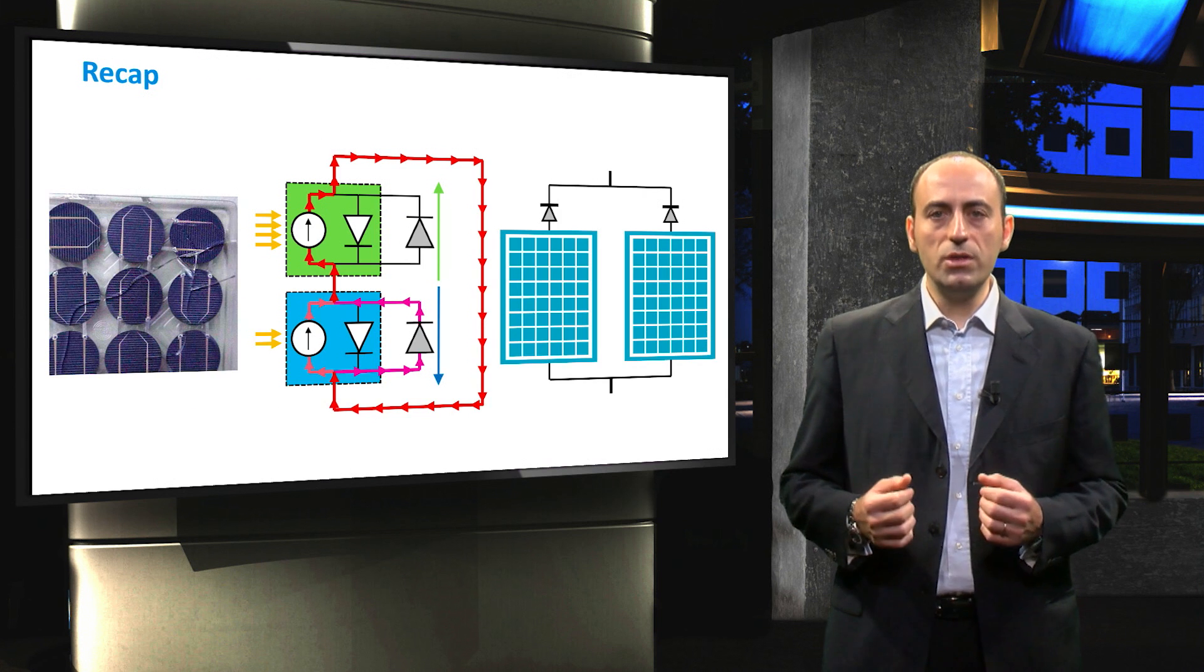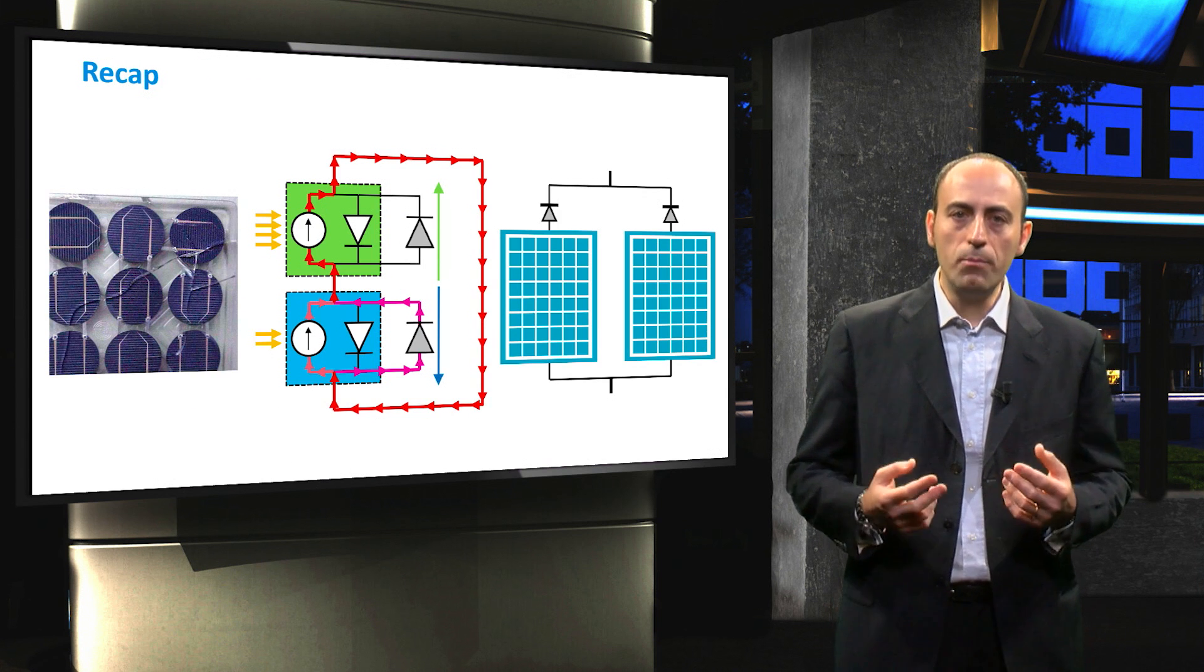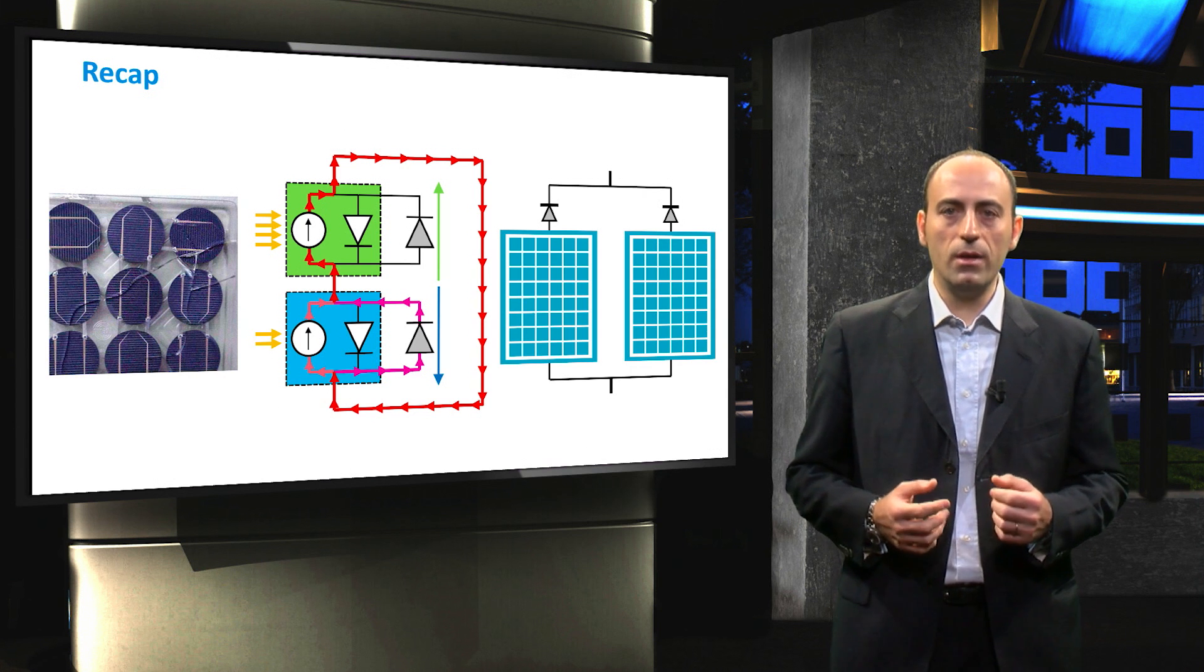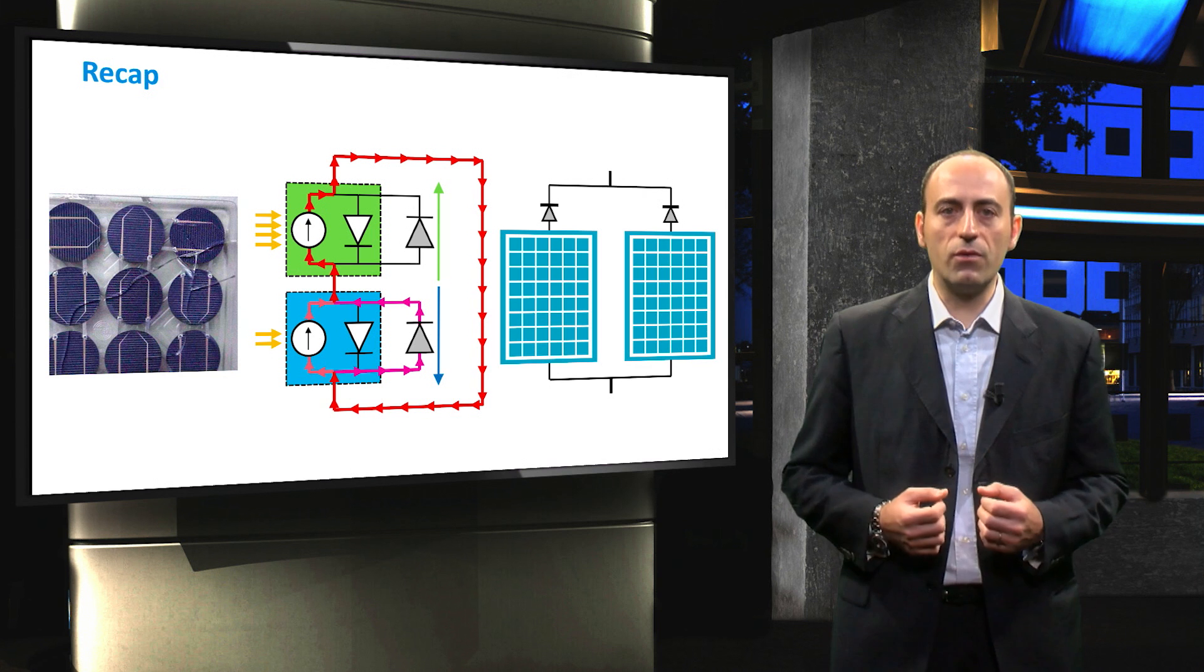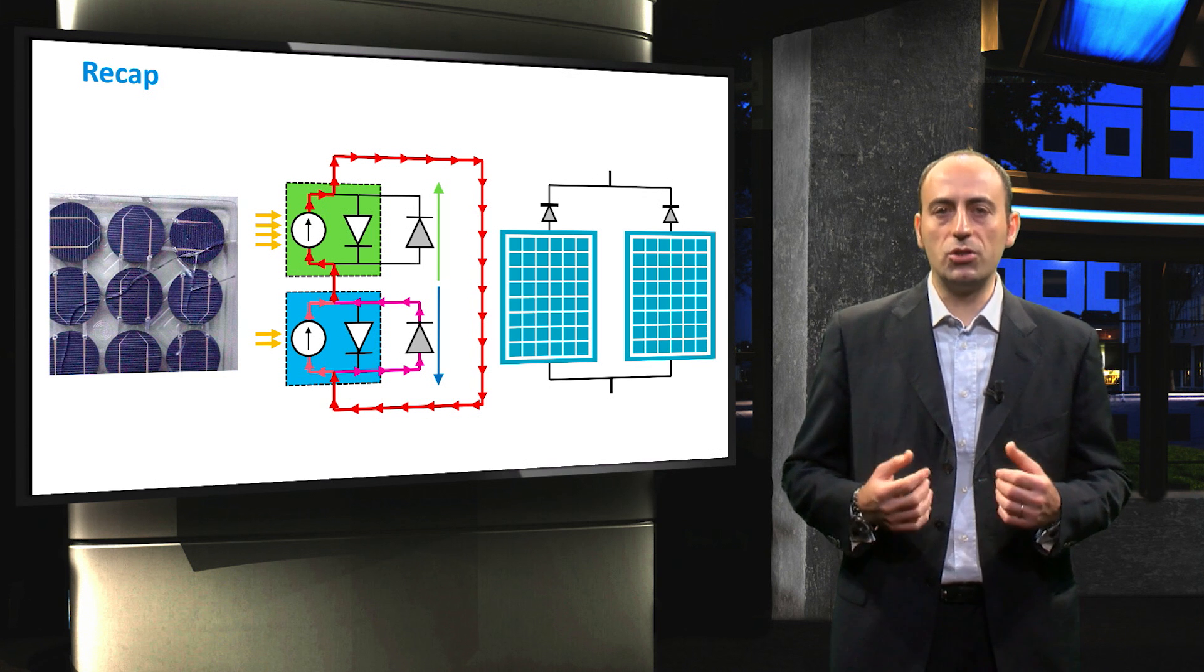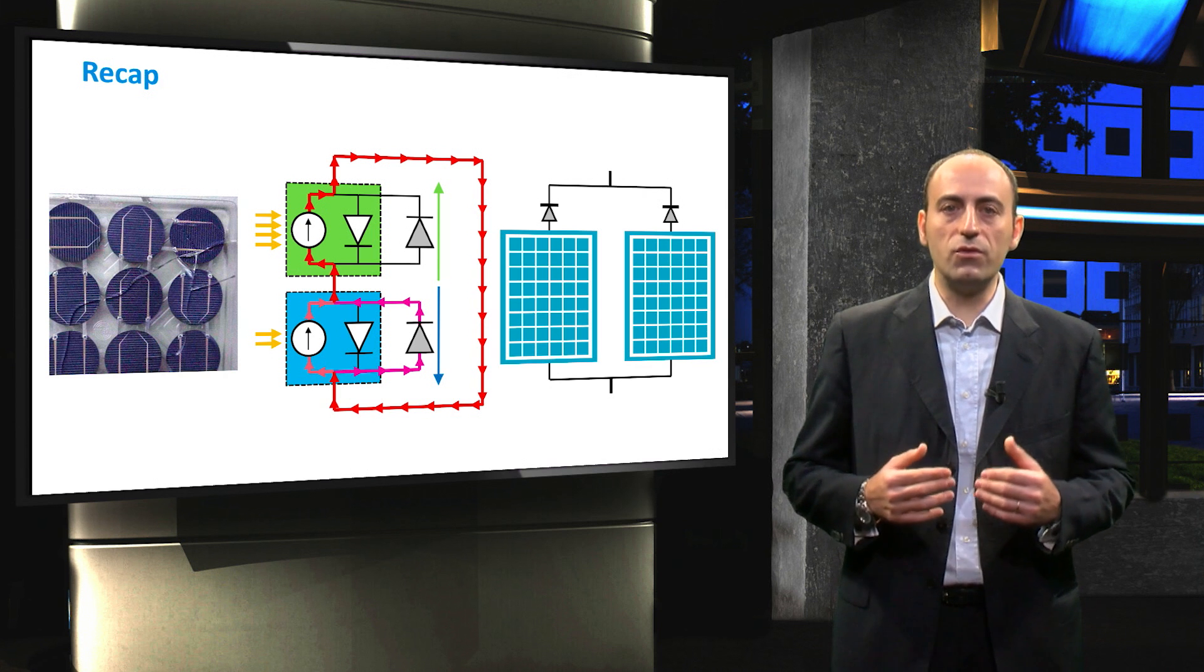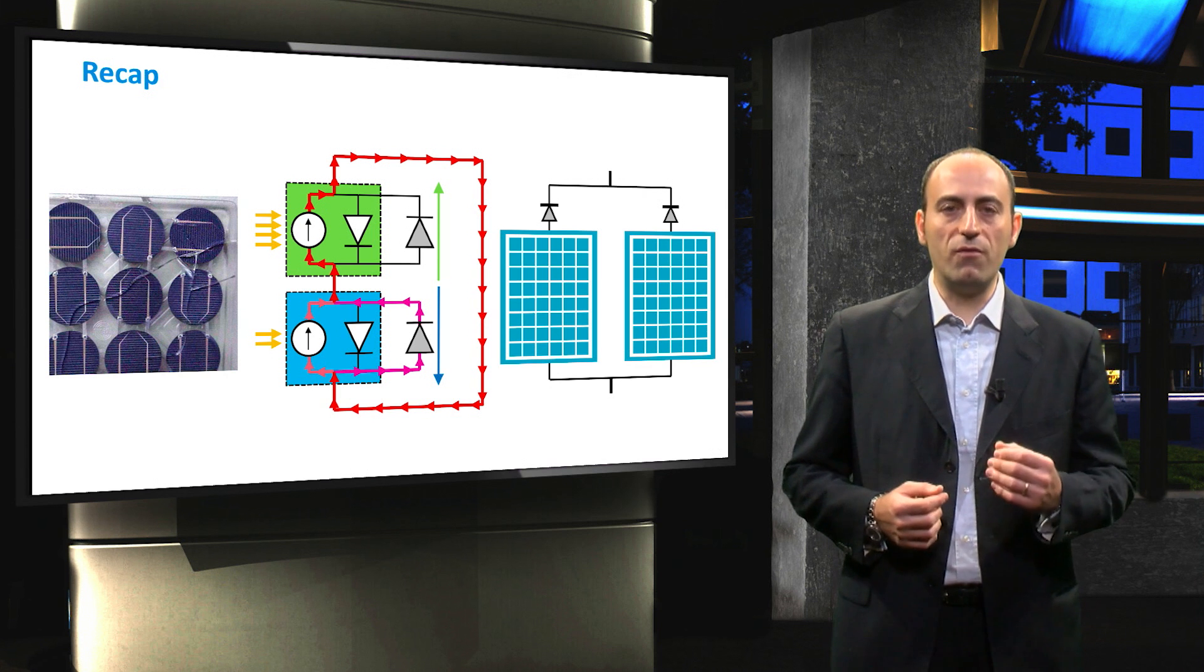To conclude this video, we have introduced two important components, the bypass diode and the blocking diode, that prevent the negative effects of current mismatch caused by partial shading. In the next video, we will see instead the effects of temperature and irradiance on the performance of the module.